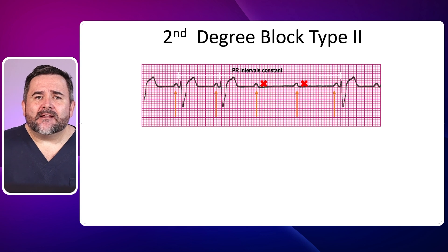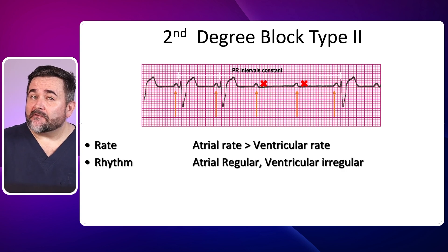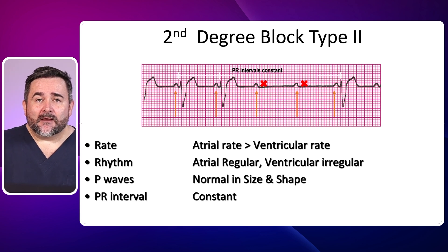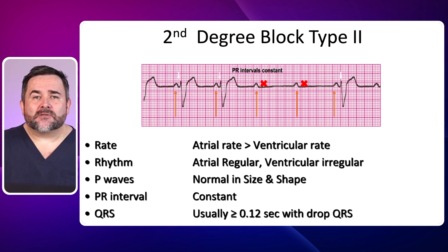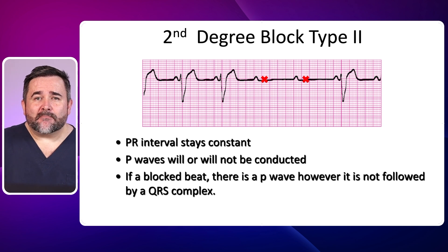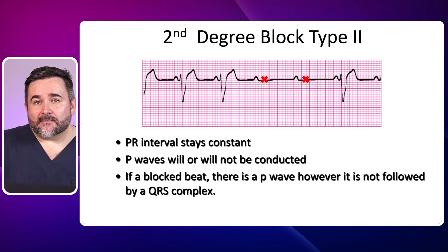Here we see a second degree block type 2. The atrial rate is more than the ventricular rate. The atrial rhythm is regular versus the ventricular rhythm which is irregular, as there are dropped beats. The P waves are normal in size and shape and you will find more P waves than QRS complexes. The PR interval is usually within normal limits but can be prolonged; however, it stays constant until there's a P wave without a QRS complex. The QRS is usually three small boxes or more with some dropped QRS complexes. The main concept to remember for second degree block type 2 is that the PR interval stays constant until you have a dropped QRS.